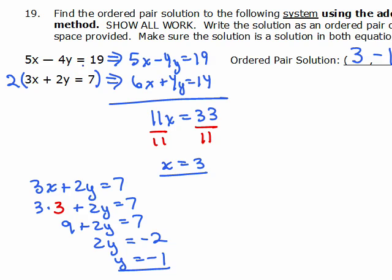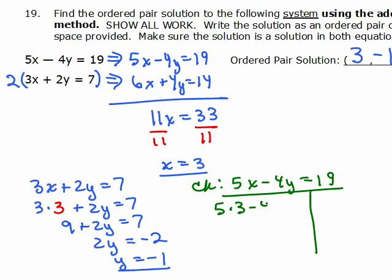Now we're going to check that in the other equation. Alright, so let's check it. You should check it in both, but at least the one you didn't just now work with. Let's see, if I put in 3 for X and negative 1 for Y, I have 15 plus 4 is 19, and on the right side, I have 19, so yee-haw, that is the correct solution. So it's (3, -1).